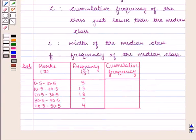Now we shall find cumulative frequency. The first entry in the cumulative frequency column will be same as that of frequency, that is 5. Next will be 5 plus 13 that is 18, 18 plus 18 is 36, 36 plus 7 is 43, 43 plus 4 is 47.